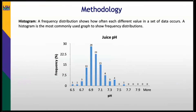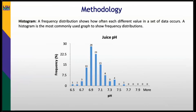The second methodology we used is the histogram — a frequency distribution showing how often each different value in a set of data occurs. For example, this is the juice pH frequency diagram. If your target for juice pH is 7.6–6.9, you can see that 28% of the juice data had that pH at that time. With this, you can also see the variability of these kinds of parameters.